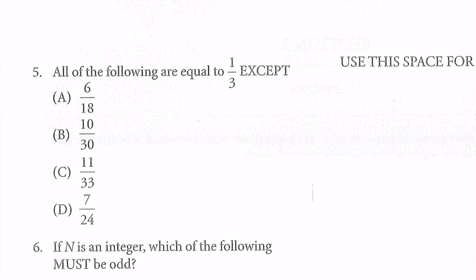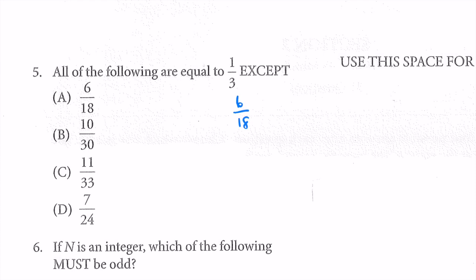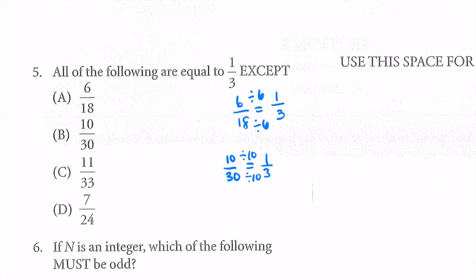Question 5: all of the following are equal to 1/3 except... 6/18 is equal to 1/3 because if you divide both the numerator and the denominator by 6 you get 1/3. Another way to check: is there something we can do to both the numerator and denominator to get 1/3? Yes — divide by 6. For 10/30: divide by 10 on both — also 1/3. So A and B are both true. For 11/33: divide by 11 on both to get 1/3. So by process of elimination, our answer must be D.